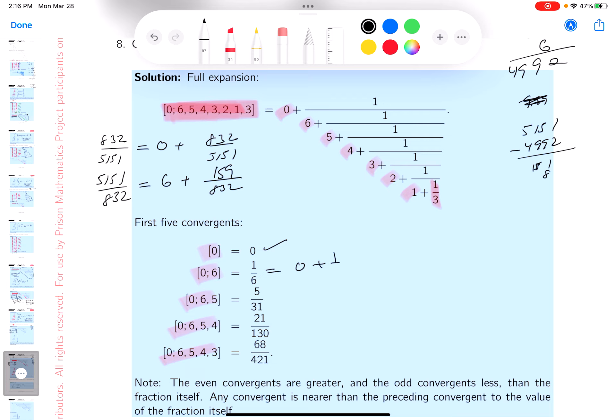What's this going to be? 0 plus 1 sixth. That's easy. What's this one going to be? 0 plus 1 over 6 plus 1 fifth. I can multiply top and bottom by 5. You can get 5 over 31.